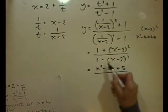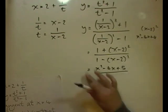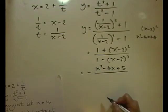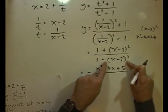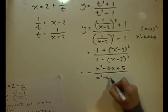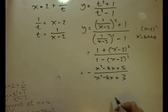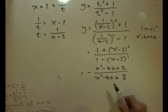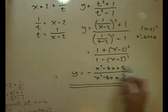The bottom becomes 1 − (x−2)². Factoring out the negative to reverse the subtraction: −((x−2)² − 1) = −(x² − 4x + 4 − 1) = −(x² − 4x + 3). The top doesn't factorise, and the bottom does but it's not worth it as it looks unbalanced. So the constraint equation is y = (x² − 4x + 5) / −(x² − 4x + 3).